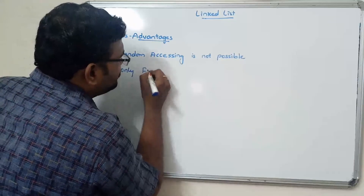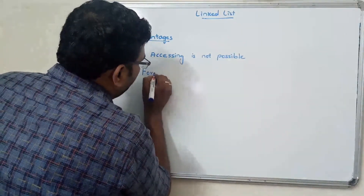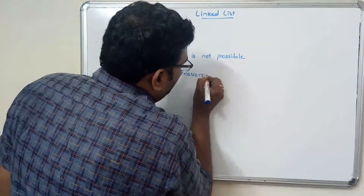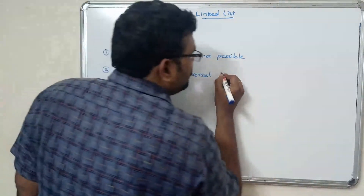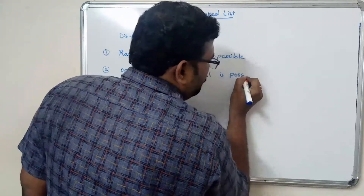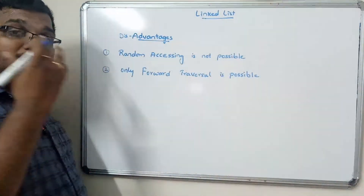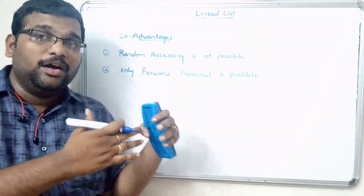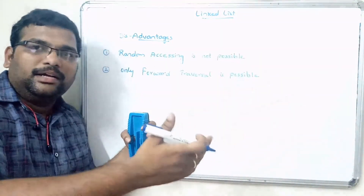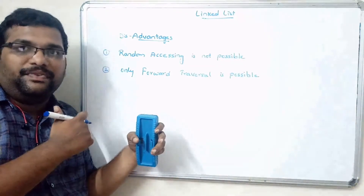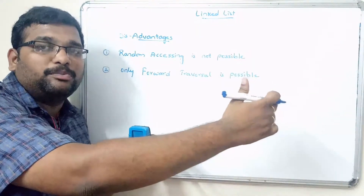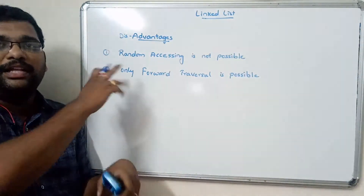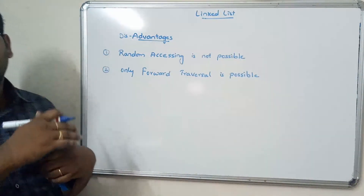The second disadvantage is that only forward traversal is possible. Every node's pointer holds the address of the next node, not the previous one. So backward traversal is not possible — if you want to access the previous node in a single linked list, it cannot be done.